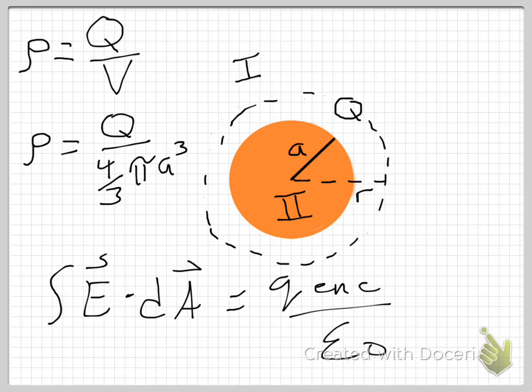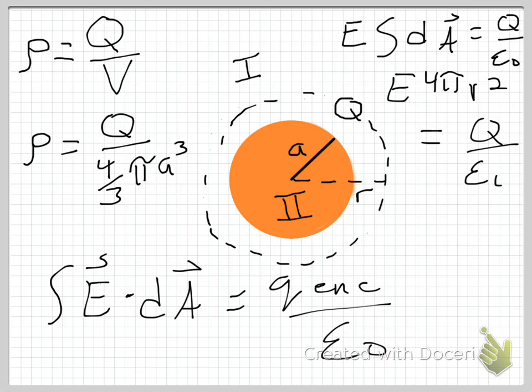In region 1, Q enclosed is just the entire charge Q. So let me go up to the top here, I'm running out of room. What that looks like is E, let me just write the intermediate step, the integral of dA is equal to Q over epsilon naught. And of course the integral of dA is just 4 pi r squared, and that is r this time because it's my Gaussian radius. So I get E times 4 pi r squared is equal to Q over epsilon naught.